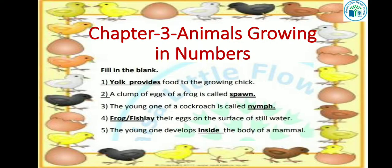Let's see, our first topic is fill in the blanks. First question is: dash provides food to the growing chick. Egg. Egg के अंदर जो chick grow होता है, तो उसे food कहां से मिलता है? Yes, जो yolk होता है yellow color का, उससे ही growing chick को food मिलता है. तो हमारा answer होगा yolk.